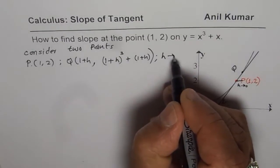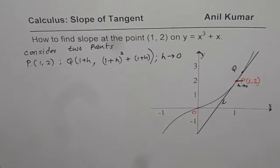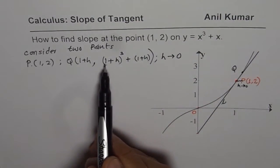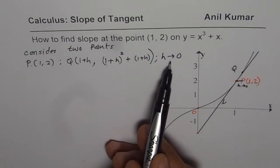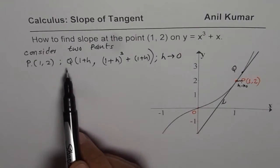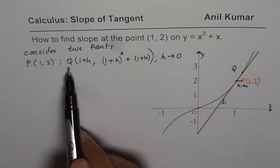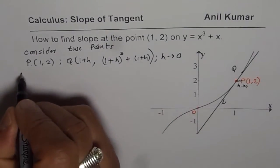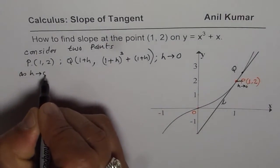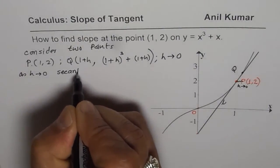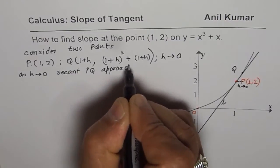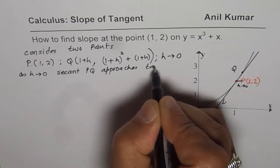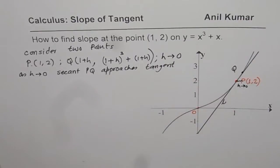We are saying h is approaching 0. If h is very close to 0, then 1 plus a very small value will make P and Q very close, so the secant approaches the tangent. As h approaches 0, secant PQ approaches the tangent. This is the concept which helps us find the slope of the tangent line.